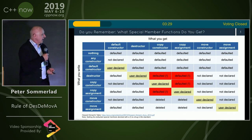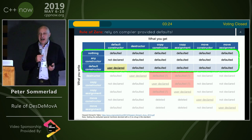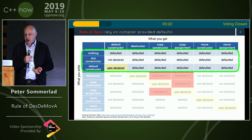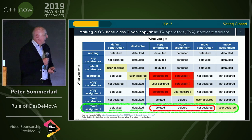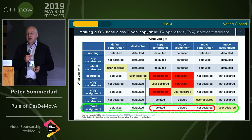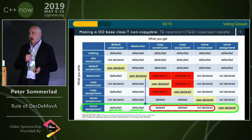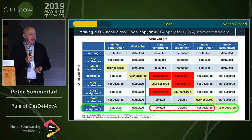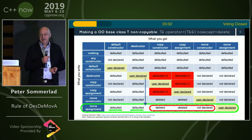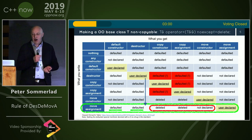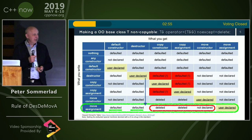Looking further, the top three rows represent the rule of zero — if you don't do anything, everything will be fine. But if you look at the next row, you have the user-declared destructor, which you need if you're managing resources or writing a base class in a polymorphic hierarchy. In that case you still get copying, which is wrong — especially for polymorphic hierarchies where copying usually means slicing, and getting that right is beyond most users' ability.